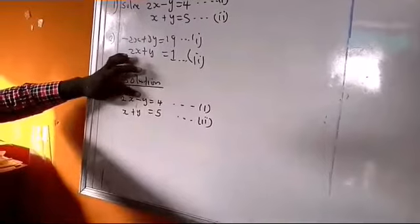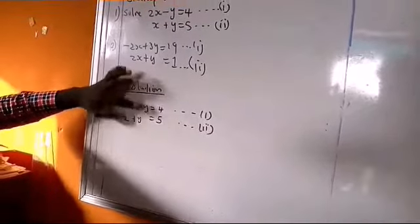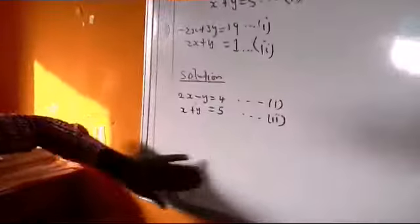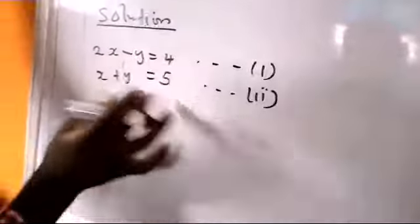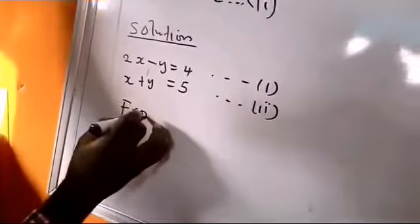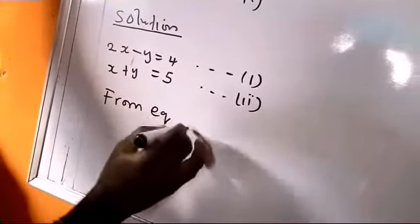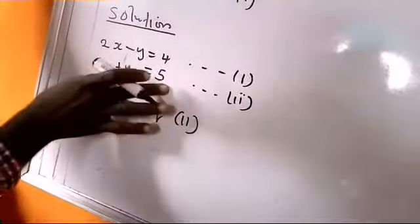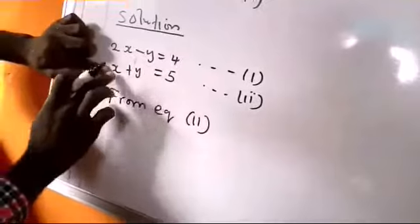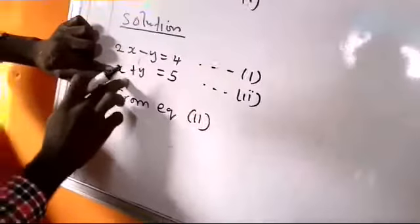If I should go for this, it's carrying negative, so I need to do some other things. So, this one will be very easy. So let's go with this. Now, from equation two, you make either y or x the subject of the formula.